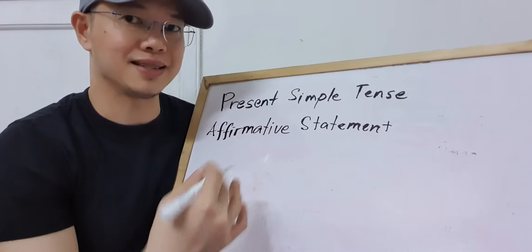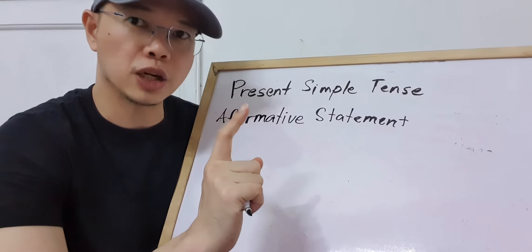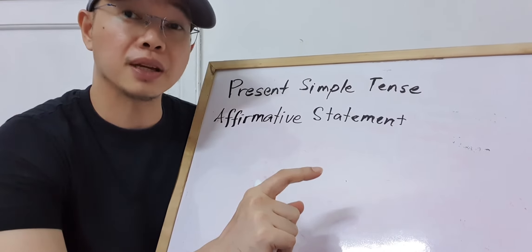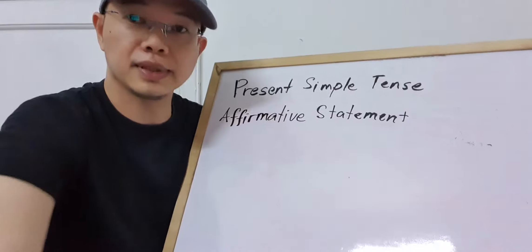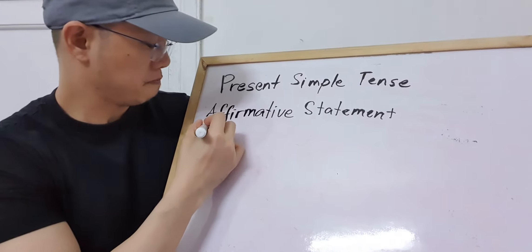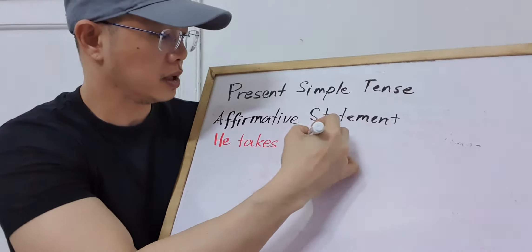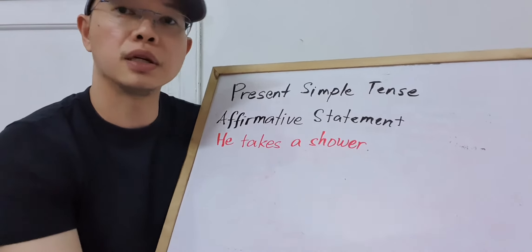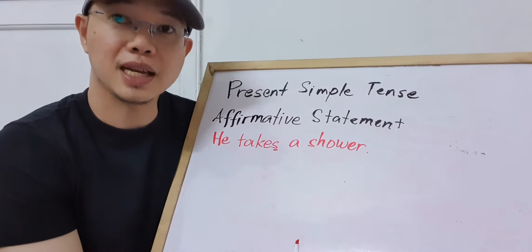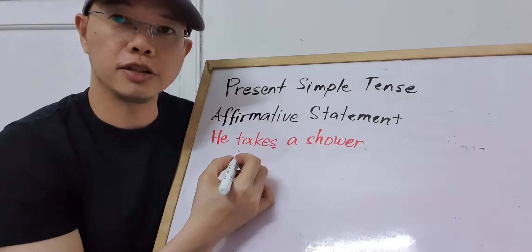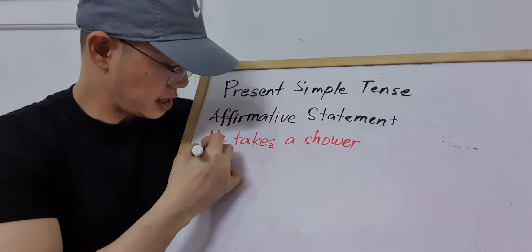First we have affirmative statement, or what we call positive statement. For affirmative statement, if your subject is singular, the verb must take the S form. If your subject is plural, the verb must take the base form. For example: 'He takes a shower' — since your subject is 'he', singular, then your verb takes the S form.